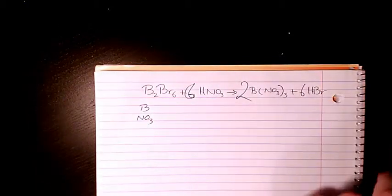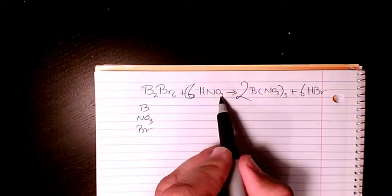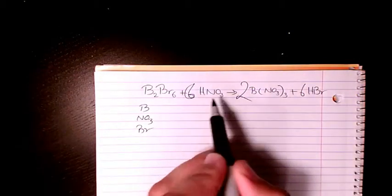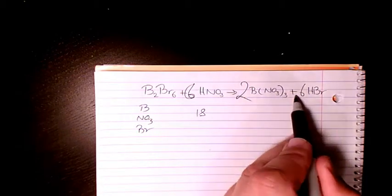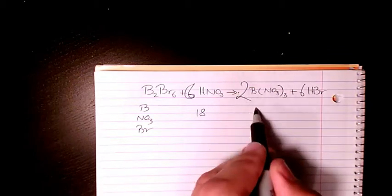What about oxygen? Oxygen, three times six is eighteen on this side, and on this side we have three times three, nine times two, eighteen. So oxygen is balanced already.